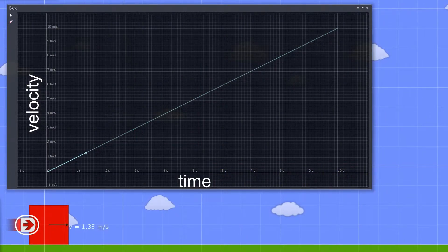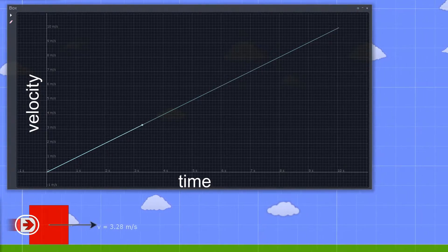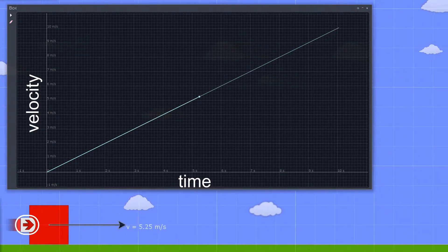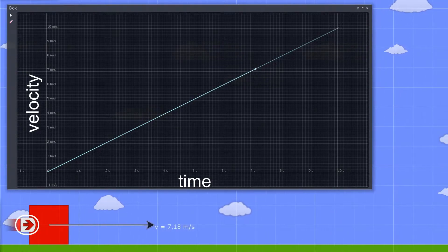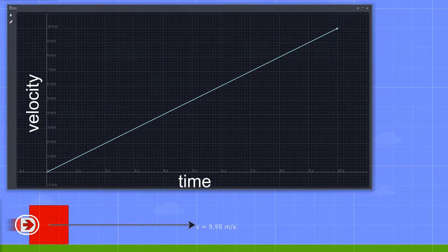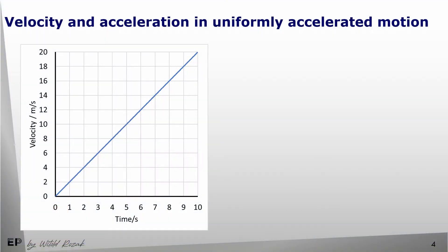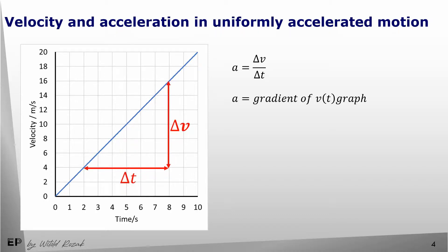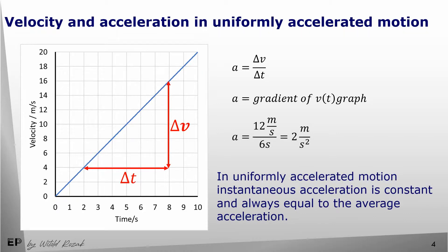Let's now have a look at another example of non-uniform motion. This time we are looking at uniformly accelerated motion, which means that acceleration is constant. Velocity increases at a constant rate, by the same amount each second, and the velocity-time graph is a straight line. Acceleration was defined as the change in velocity divided by the change of time, which gives us the gradient of this graph. So the gradient of the velocity-time graph represents acceleration. The slope of this graph is constant, so acceleration is constant, which means that instantaneous and average accelerations are equal.